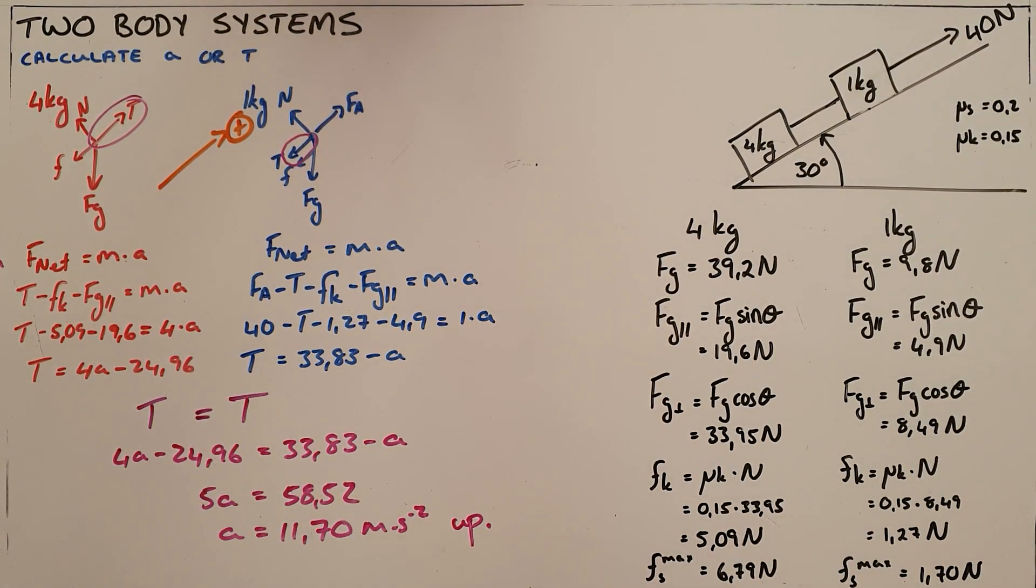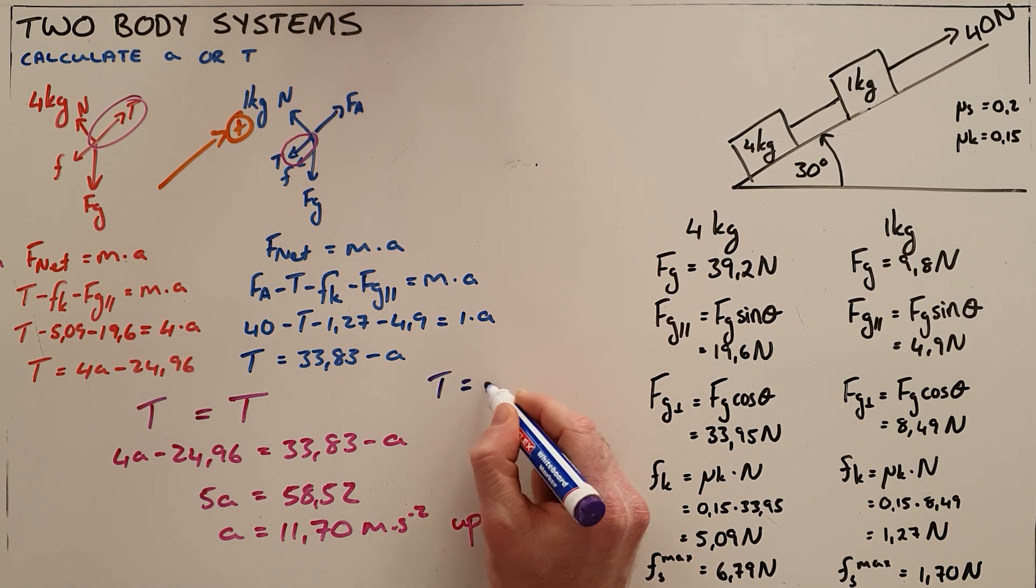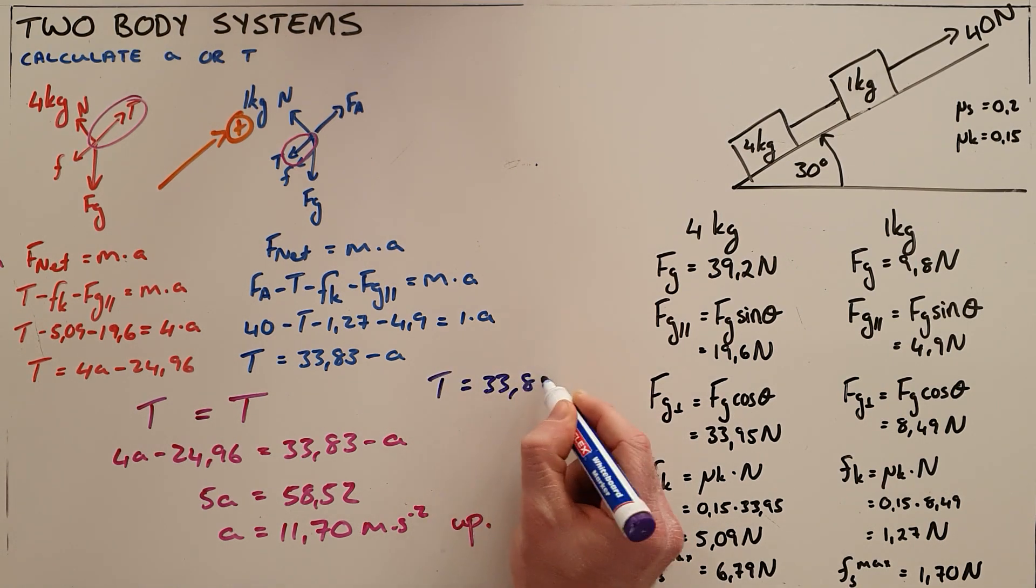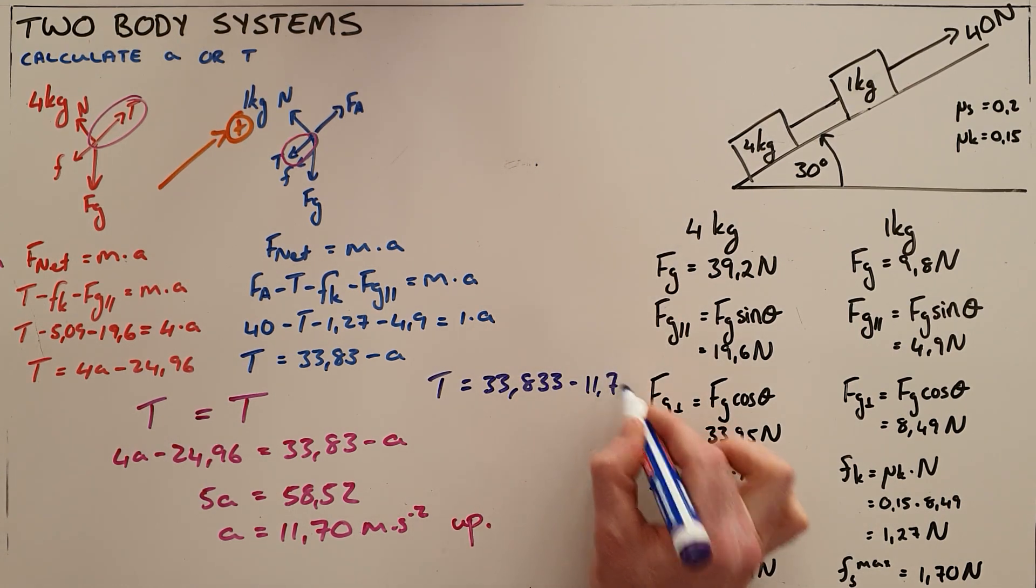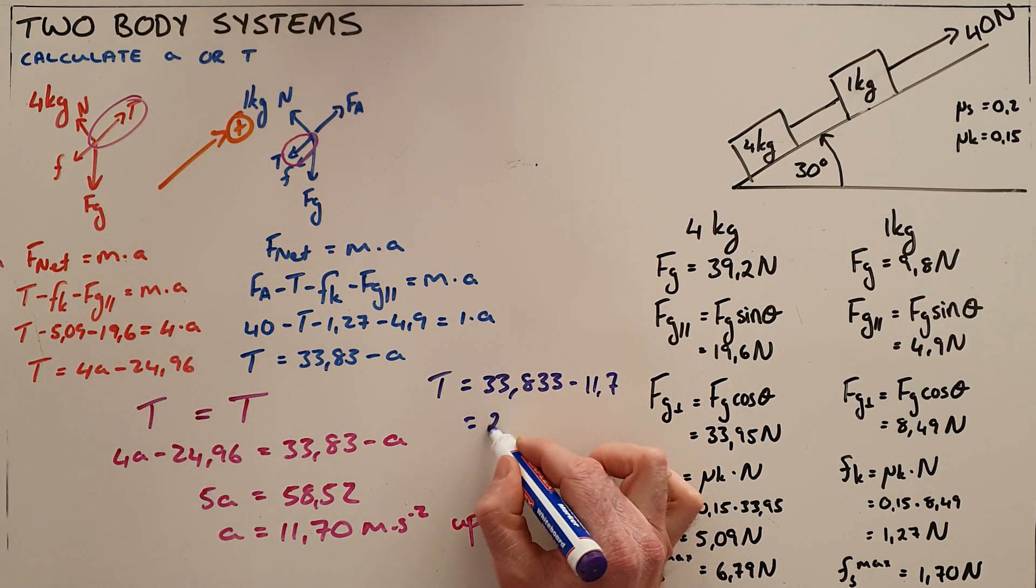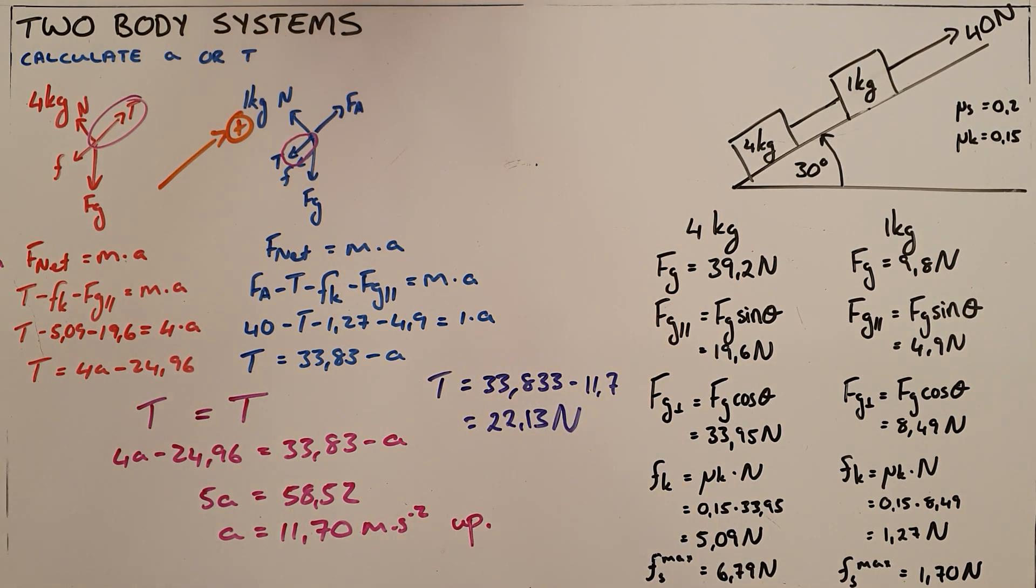I can now also find the unknown tension force here where I can say tension here must be equal to, if I just substitute in the correct acceleration of 11.7, I find that the tensional force is 22.13 newtons in this rope.